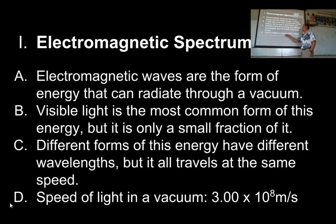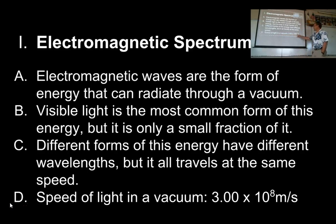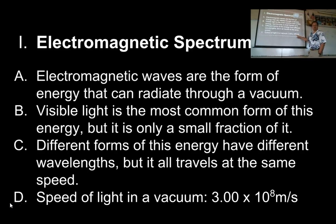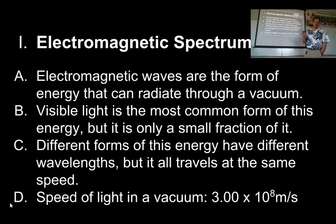The speed of light in a vacuum — also the speed of microwaves, gamma waves, and radio waves — is 3.00 times 10 to the 8th meters per second. That's 300 million meters every second, which is ridiculously fast. It only takes light eight minutes to go from the sun to the earth, so that's a huge distance covered in only eight minutes. This is the speed of electromagnetic energy in a vacuum.